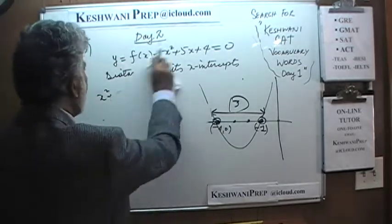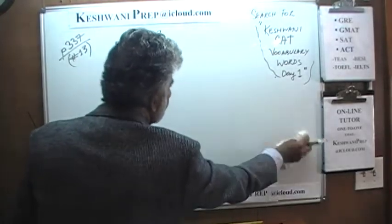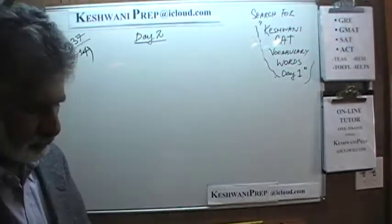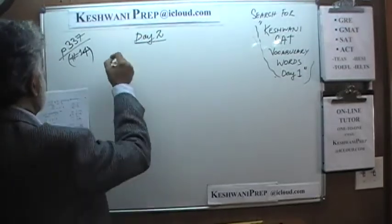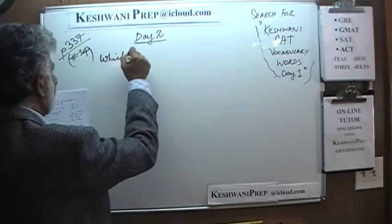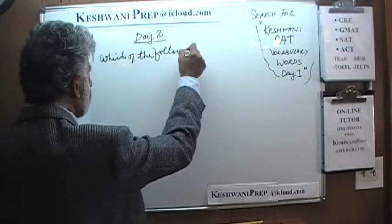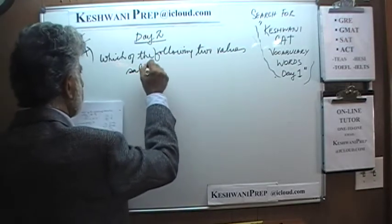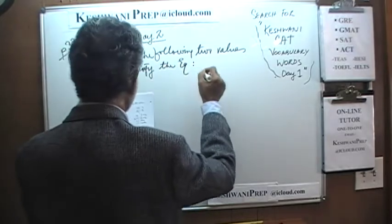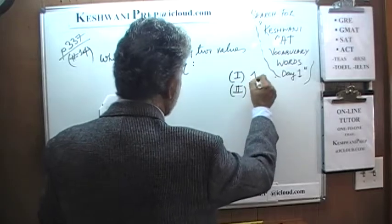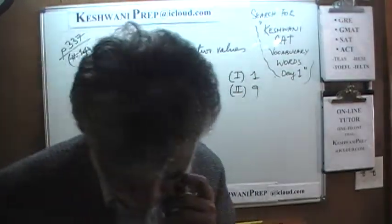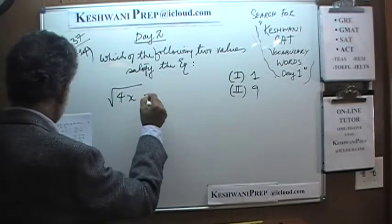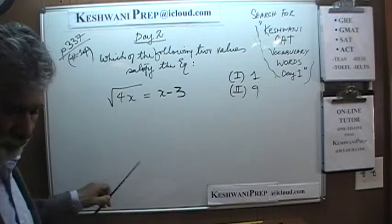Number 14. It says: which of the following two values satisfy the given equation? And the two values are 1 and 9. The equation given to us involves a square root expression.